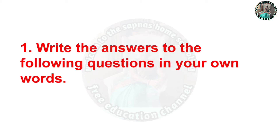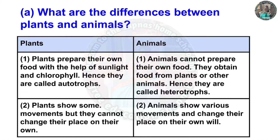Question: Write the answers to the following questions in your own words. A. What are the differences between plants and animals? First difference: Plants prepare their own food with the help of sunlight and chlorophyll, hence they are called autotrophs. Animals cannot prepare their own food; they obtain food from plants or other animals, hence they are called heterotrophs. Second difference: Plants show some movements but they cannot change their place on their own. Animals show various movements and change their place on their own will.